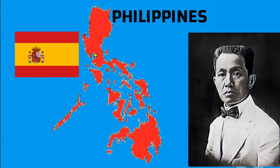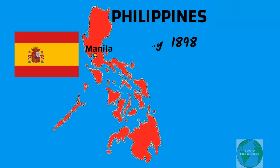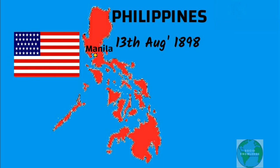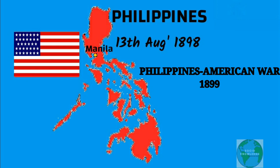On June 12, Aguinaldo proclaimed the independence of the Philippines. On August 13, the US captured Manila from the Spanish after victory in the Battle of Manila. But instead of handing over the city to the local Filipinos, the US itself took control of the city. This action ended the Filipino-American collaboration and ultimately led to the Philippine-American War the next year in 1899.